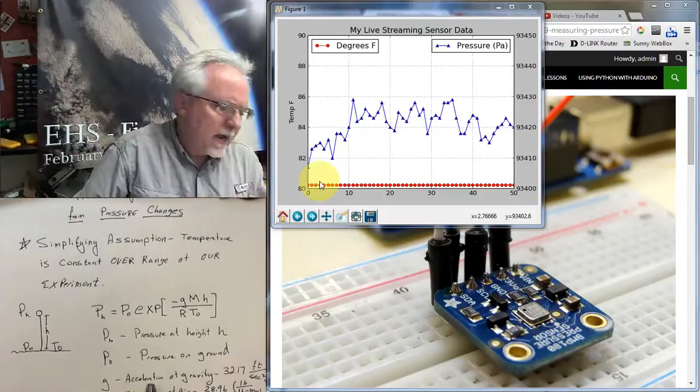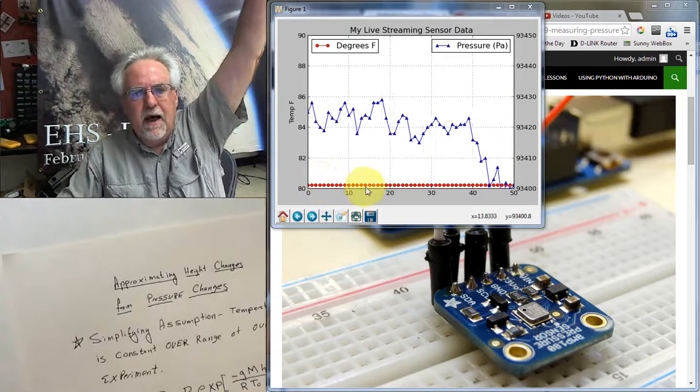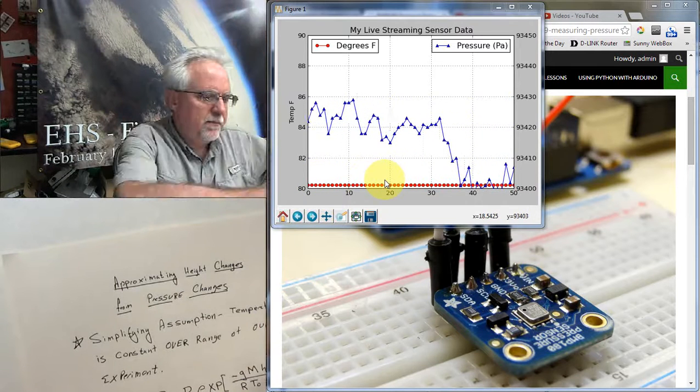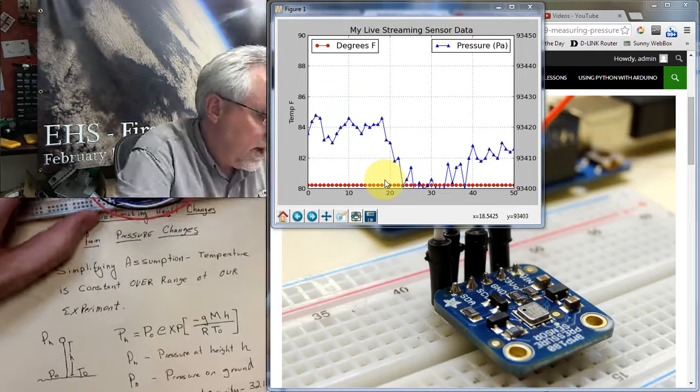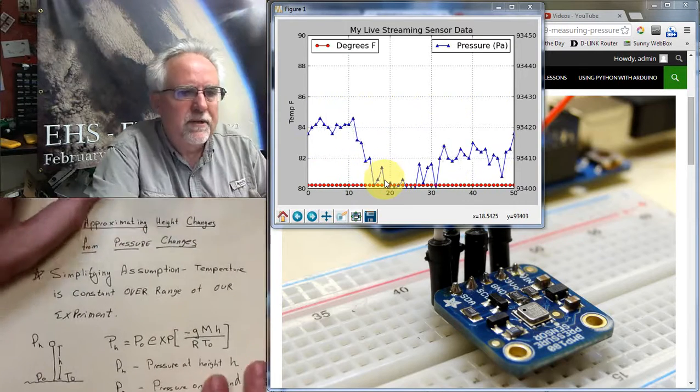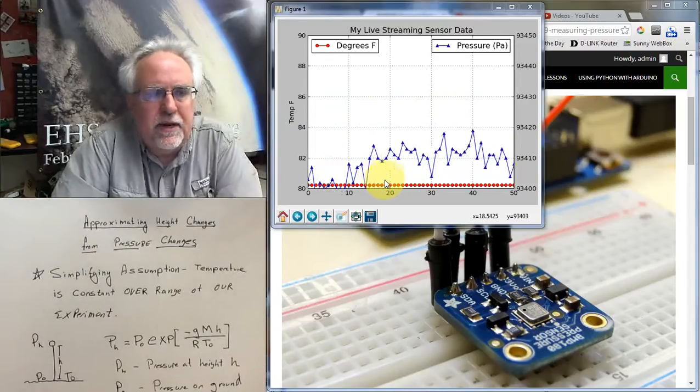But as far as what I can measure between there and about as far as I can lift it up here, I'm not really seeing any change in the temperature that's discernible. And so for the sake of this analysis, where we're going to be doing things in my room, we're going to assume that the temperature does not change with elevation.